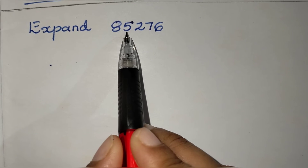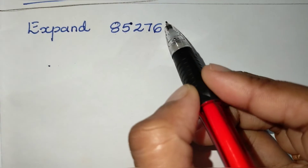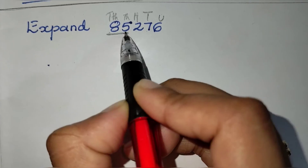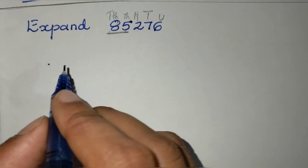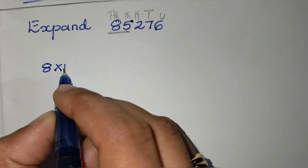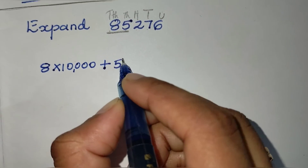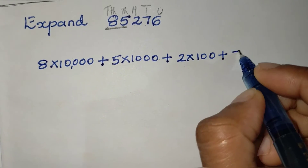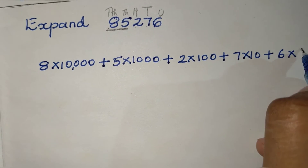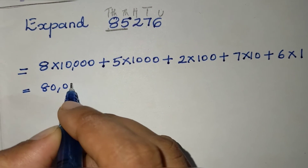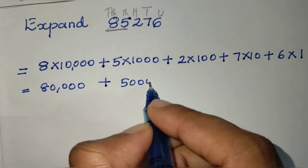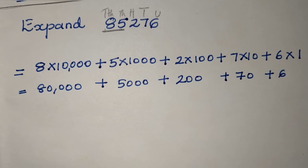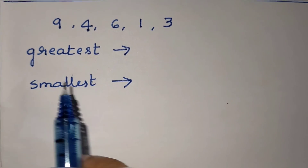The next number is 85,276. Mark the places: units, tens, hundreds, thousands, ten-thousands. To expand: 8 is in ten-thousands place, 5 is in thousands place, 2 is in hundreds place, 7 is in tens place, 6 is in units place. So: 8 × 10,000 = 80,000; plus 5 × 1,000 = 5,000; plus 2 × 100 = 200; plus 7 × 10 = 70; plus 6. The expanded form of 85,276 is 80,000 + 5,000 + 200 + 70 + 6.